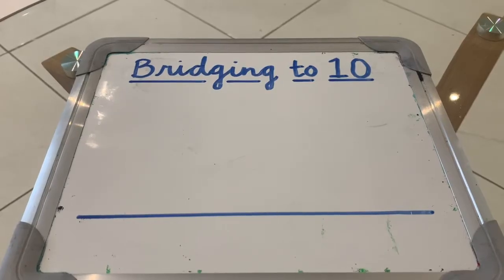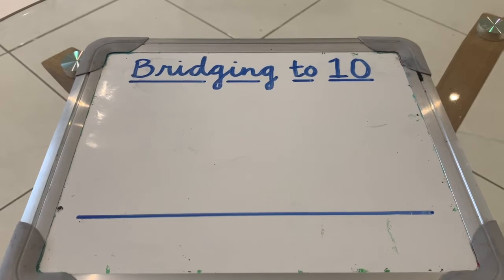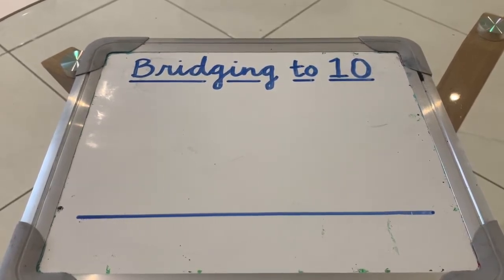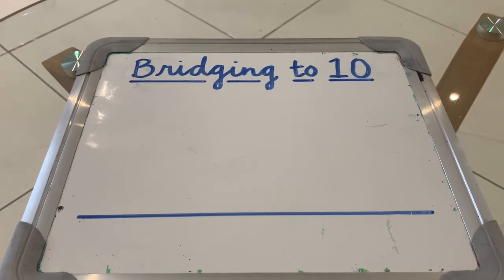Bridging to 10 is one of the first skills that I'd like you to practice. And what you do is whenever you are approaching a 10 and you're going to go past it, you're going to split the number you're adding so that you add to the nearest 10 and then whatever's left over from there is very easily added on from that point. Let me give you an example.